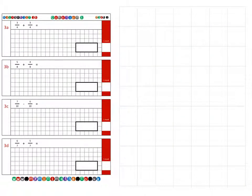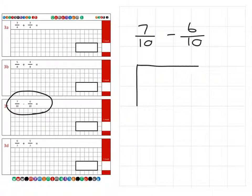And next on to question 3c, which is 7 tenths. And we're subtracting, taking away 6 tenths. So if we draw a box containing 10 parts, 10 smaller squares, like so.